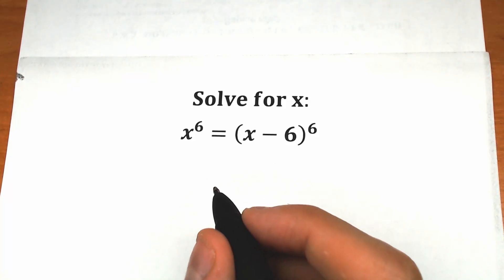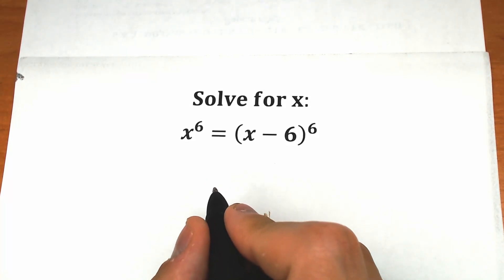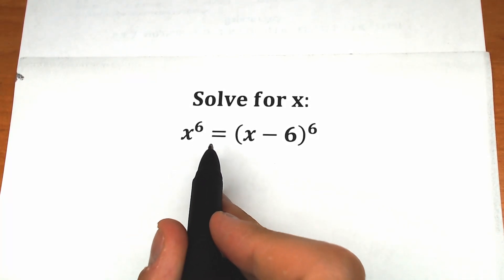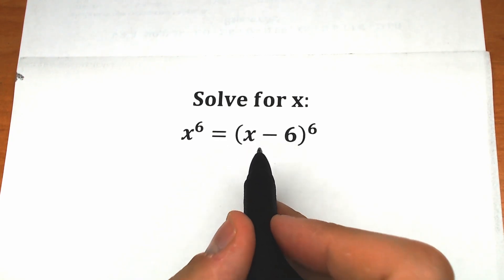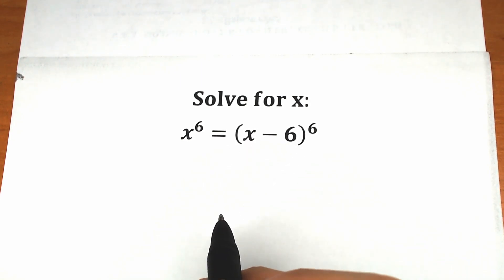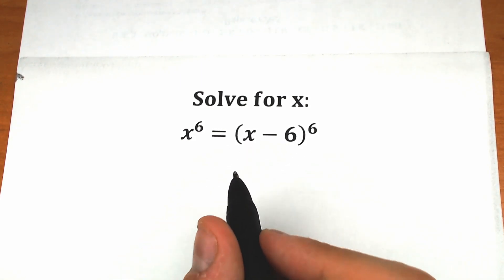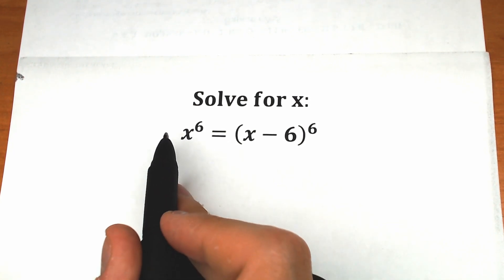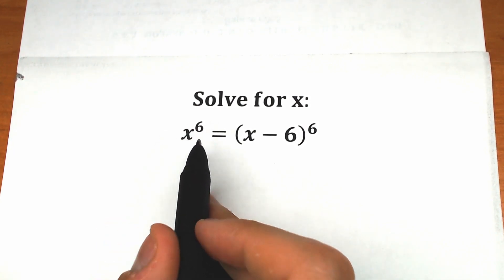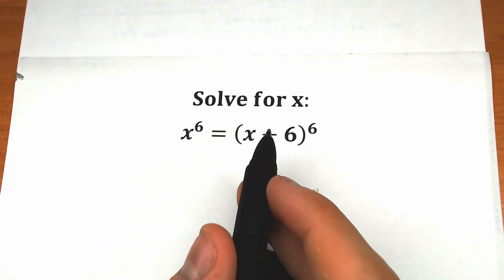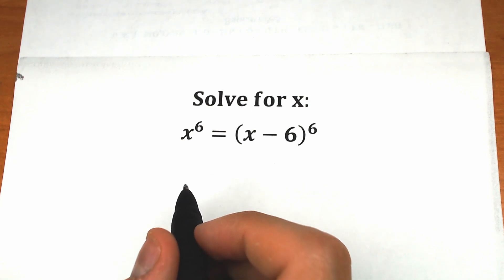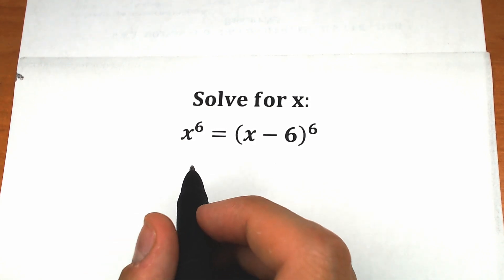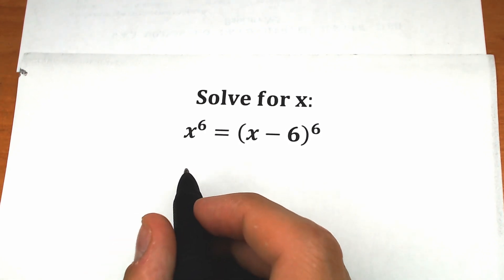Hello everyone, happy to see you here. Welcome back to my channel Higher Mathematics. Today we have a really great challenge: x to the sixth power equal to x minus six, all raised to the sixth power. A lot of students say we can just apply the sixth root on both sides, but in math it doesn't work like that. We need to find a great approach, and in this video I'm going to show you this approach.